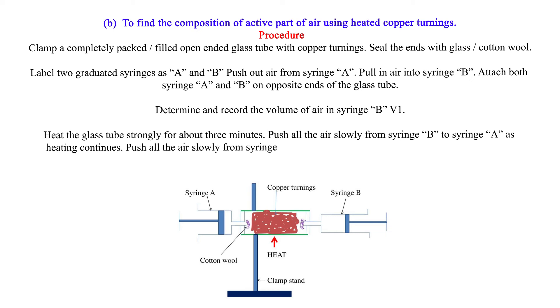Push all the air slowly from syringe A back to syringe B and repeatedly back and forth. After about 10 minutes, determine the new volume of air in syringe B, V2.